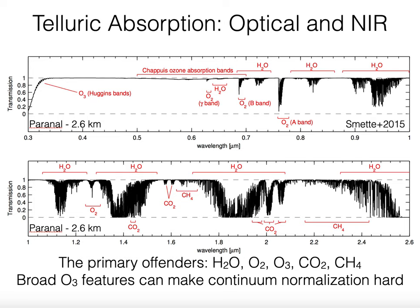Across the optical and the infrared, telluric absorption looks like this. You can see there are discrete bands of absorption lines due to molecules like water, molecular oxygen, ozone, CO2, and methane. Once you get longward of about half a micron, these absorption lines at some low level are really everywhere, but in the infrared it becomes a really serious problem. There are actually very few windows that aren't heavily contaminated by one absorber or another.